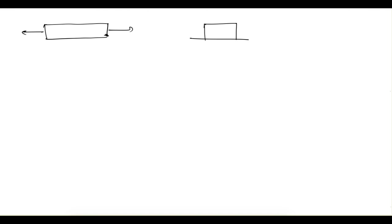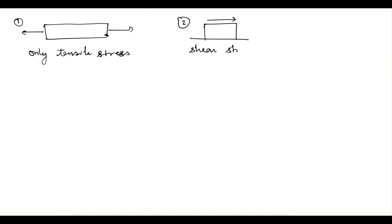Hello everyone. So till now we have seen two types of cases. In the first one we had applied a load that was normal to the surface of the body, and in the second one we had applied a load that was parallel to the surface of the body. If we say that only tensile stress exists in the first case and only shear stress exists in the second case, then both these statements would be wrong.